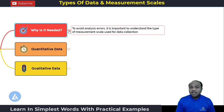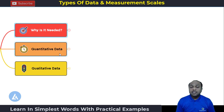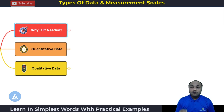Once we understand why we need to learn this important topic, let me explain that there are mainly two types of data. The first one is quantitative data and the second one is qualitative data. I am going to explain each data type along with the measurement scale associated with it, with the help of practical examples.